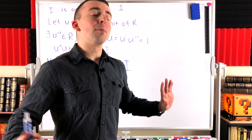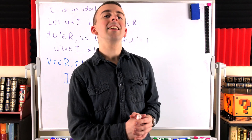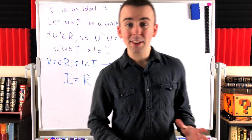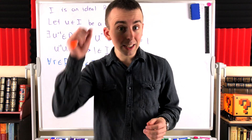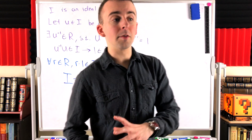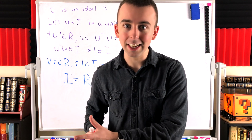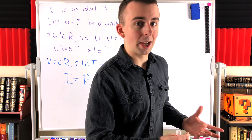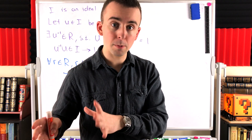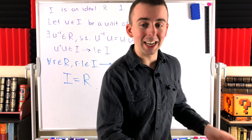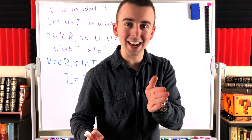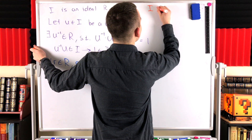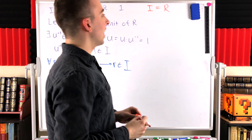Let's go to the next direction, which is a breeze. For this direction, we need to show that if an ideal has no units, then it is a proper ideal. I think we should use the contrapositive, because that gives us a really strong assumption. The contrapositive of 'if it has no units, then it's a proper ideal' is: if it's not a proper ideal, then it does have at least one unit — meaning if the ideal is equal to the ring, then it has at least one unit. That's a ton of information to start with. So let's use the contrapositive and assume that the ideal I is equal to the ring.